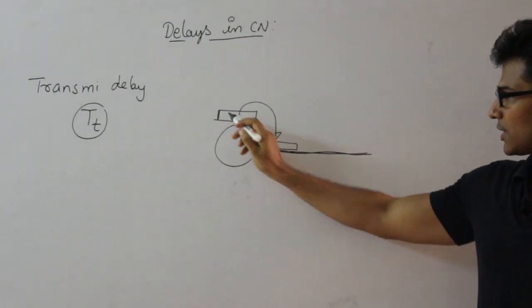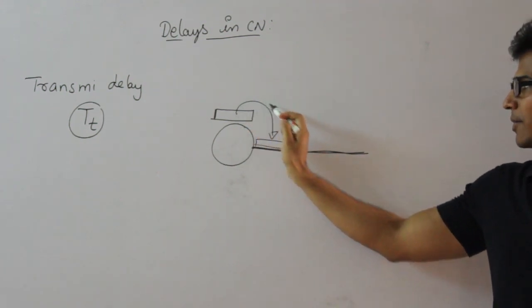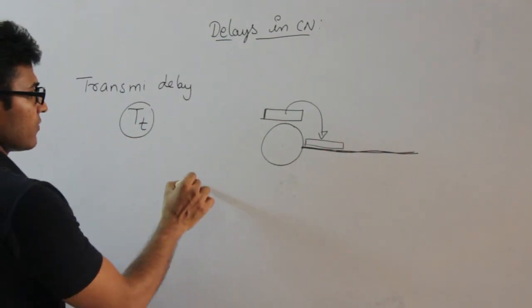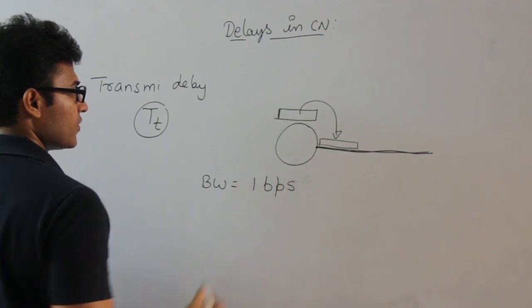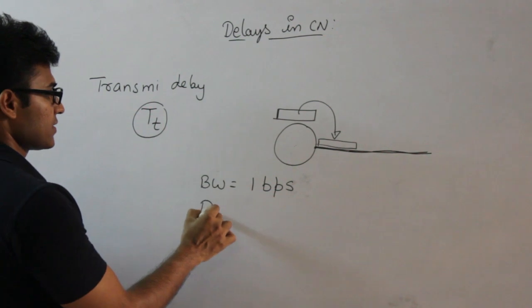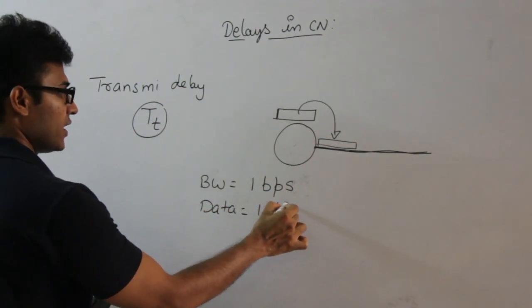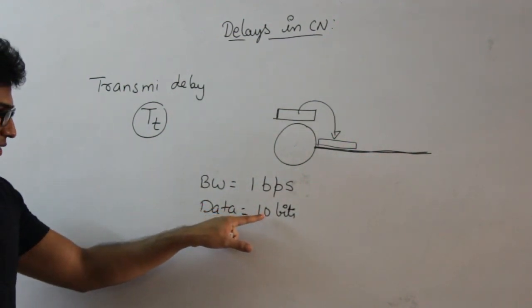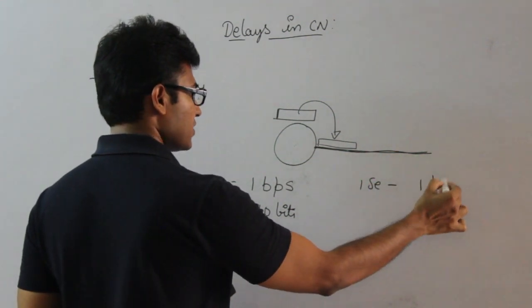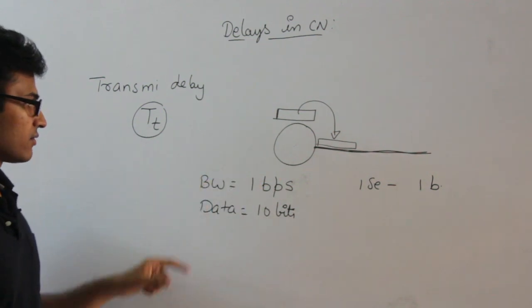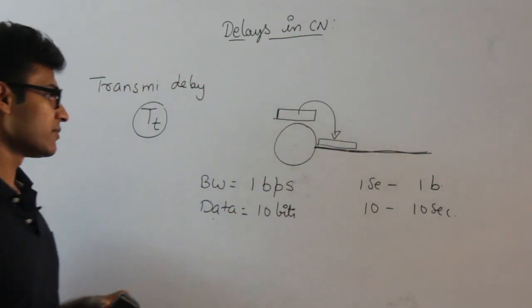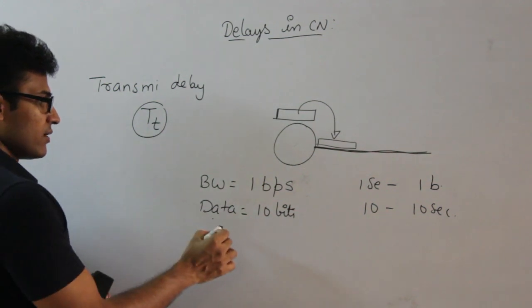Transmission delay is the time taken by the host to put the data packet onto the outgoing link. To calculate it: if the bandwidth is 1 bit per second, that means every second we can send one bit. So if the data size is 10 bits, the transmission delay is 10 seconds — one second per bit.